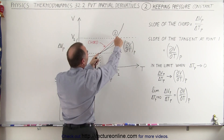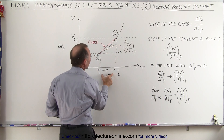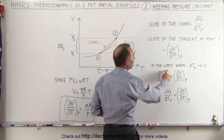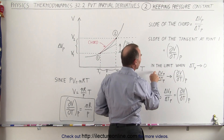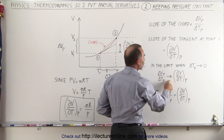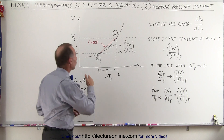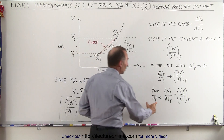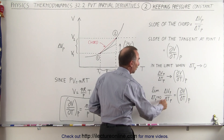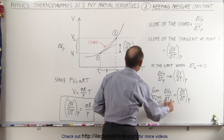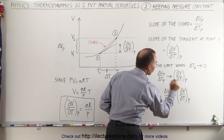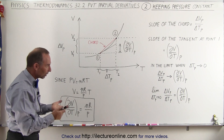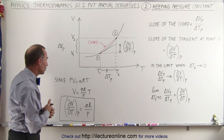Now, what happens when we bring the two points closer and closer together, reducing the change in temperature while keeping the pressure constant? In the limit when the change in temperature approaches zero, the ratio — or the slope of the chord — will approach the slope of the tangent at point 1, or equivalently at point 2 as the two points come together. Therefore, in the limit as ΔT goes to zero, the ratio ΔV/ΔT equals the partial derivative of volume with respect to temperature keeping pressure constant.